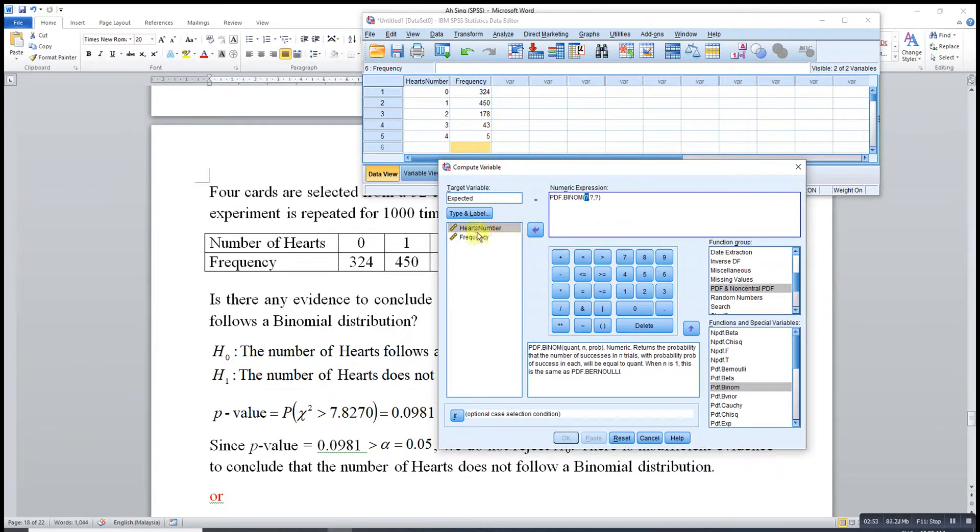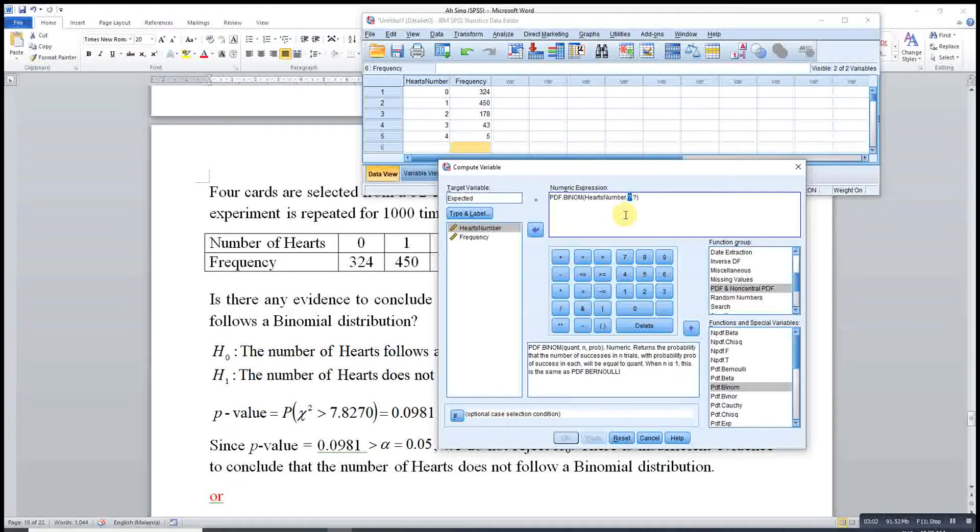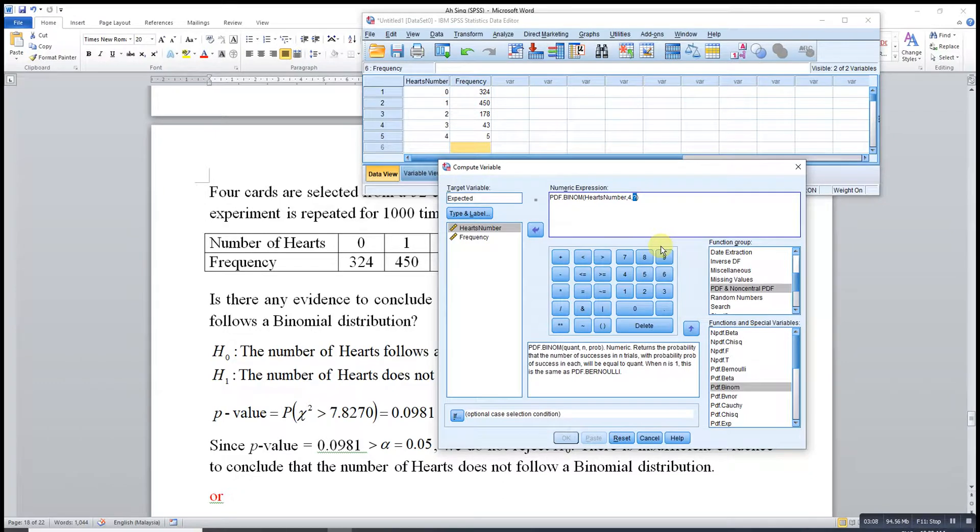The variable is heart number. And n here, each experiment we selected 4 cards, so it is 4. And then the probability here is 13 over 52, which is 0.25. And then we repeat this experiment for 1,000 times. Press OK.